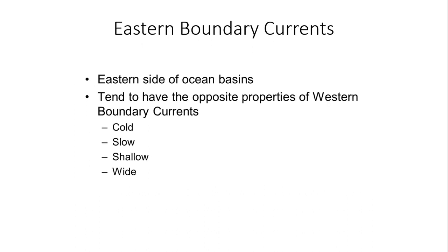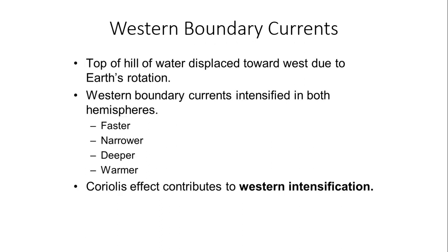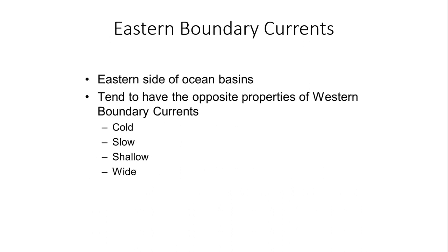Eastern boundary currents are located on the eastern side of these ocean basins and tend to have the opposite properties of the western boundary currents. Whereas western boundary currents are faster, narrower, deeper, and warmer, the eastern boundary currents are colder, they move slower, they're much shallower, and they're also wider.